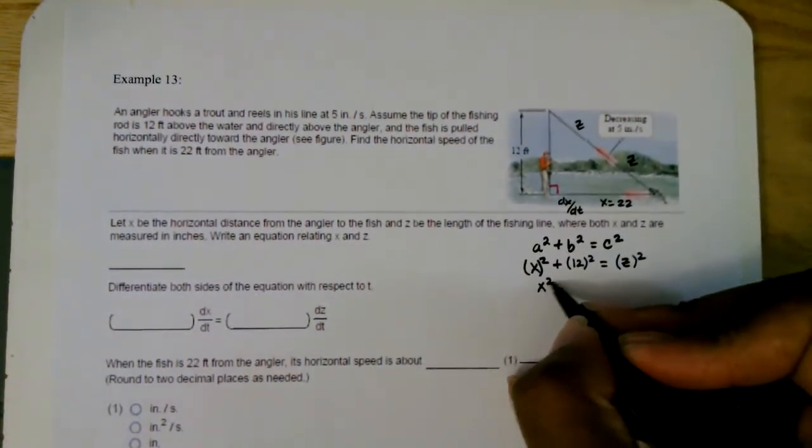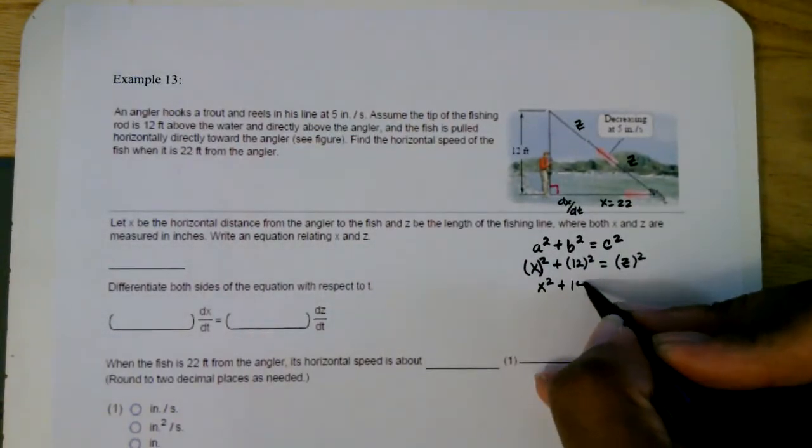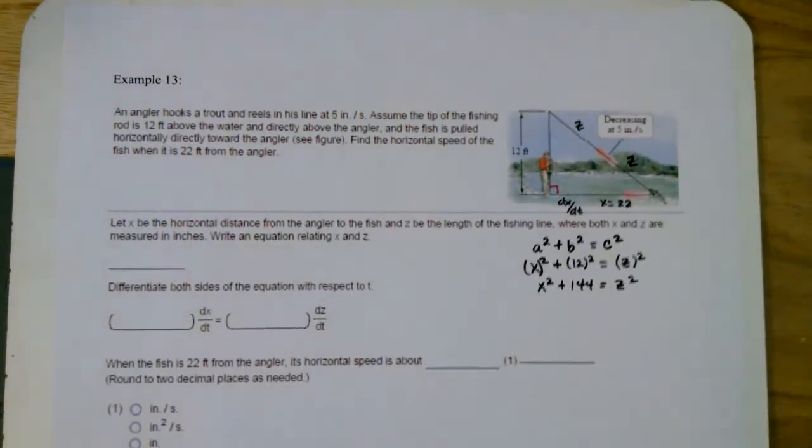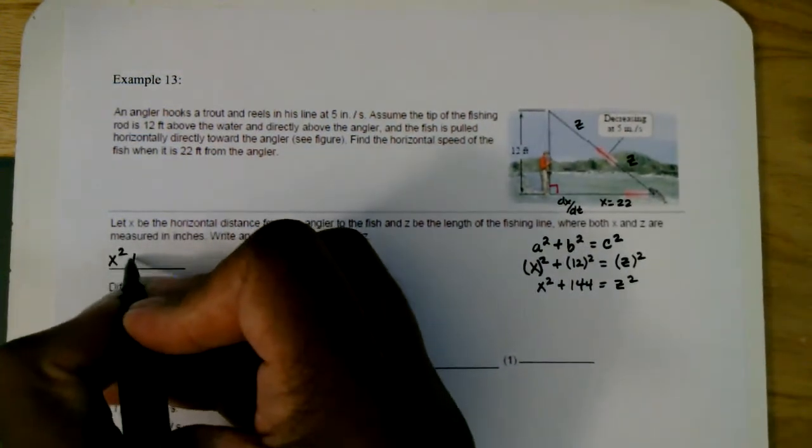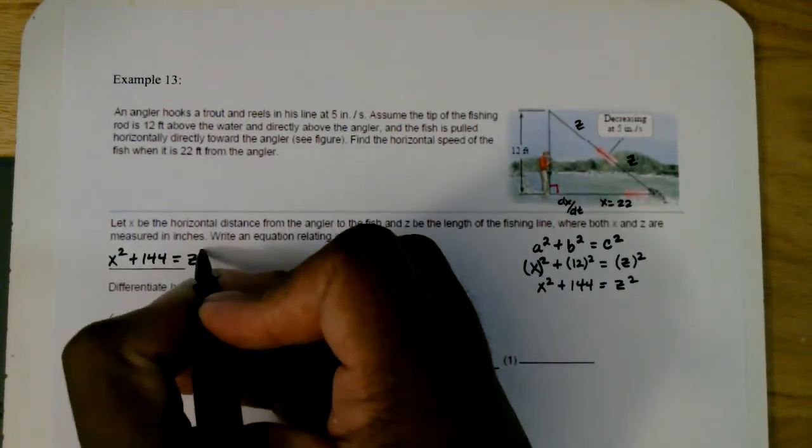Simplify this. This will be x² plus 12 squared, which is 12 times 12. That'll be 144. And that's equal to z². So the equation relating x and z is just going to be x² + 144 = z².